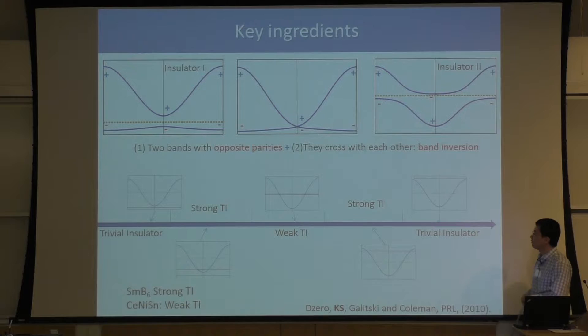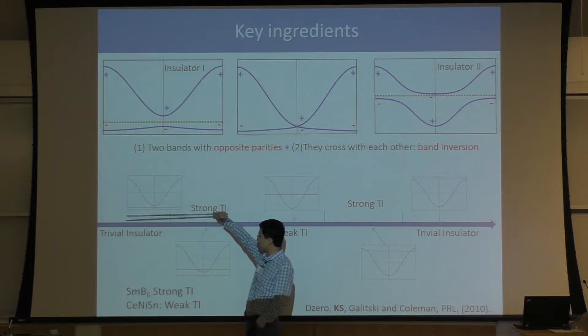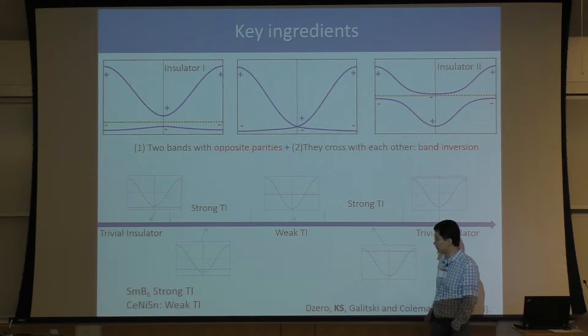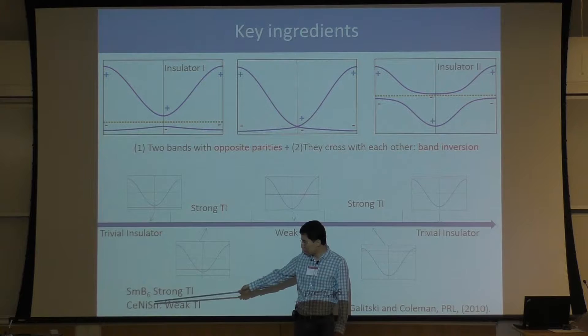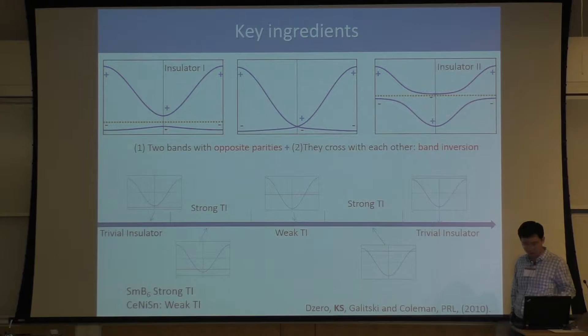That's the basic physics picture. Based on this picture, we also performed model calculations and showed that by tuning the energy of the localized band, we could realize all kinds of different insulators, from trivial insulator to strong topological insulator, weak topological insulator, etc. Based on these theoretical calculations, we predicted two materials as possible heavy fermion topological insulators, which we called topological Kondo insulators.